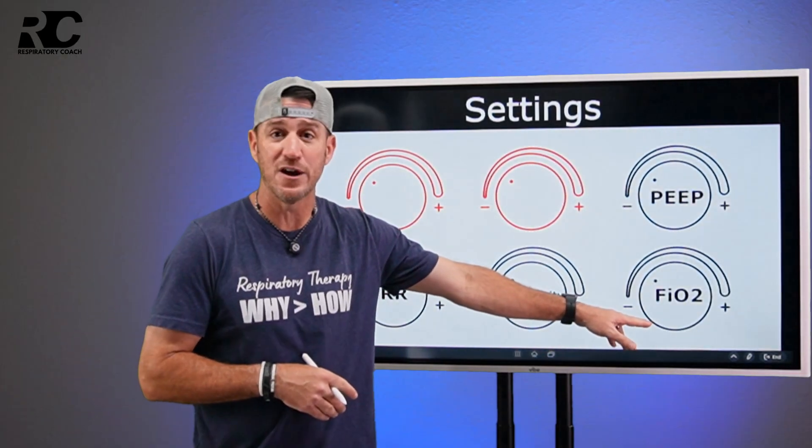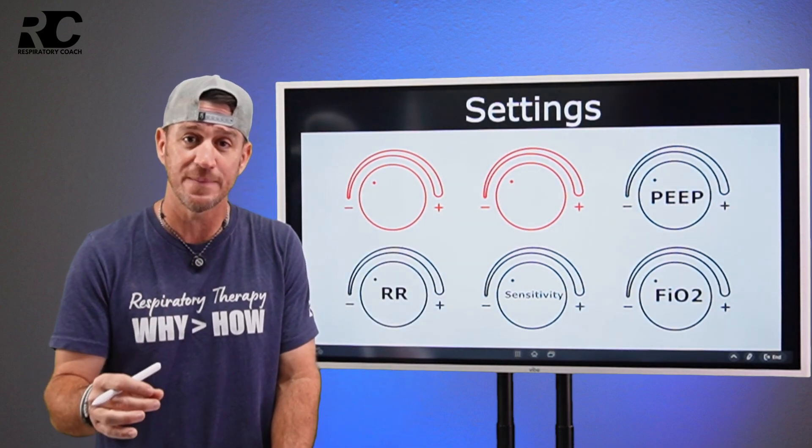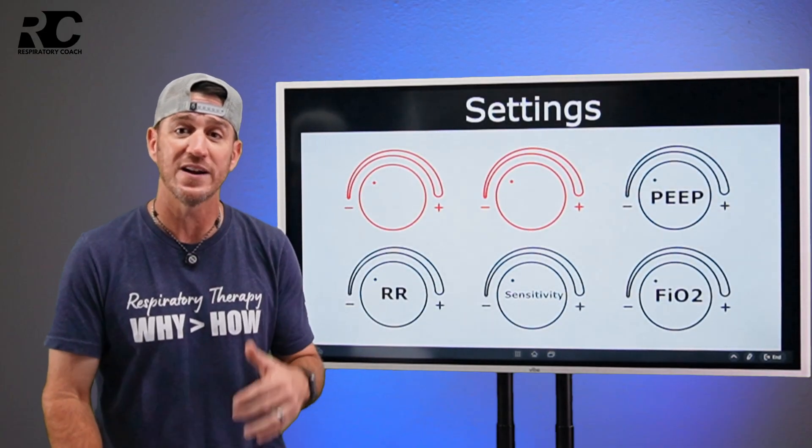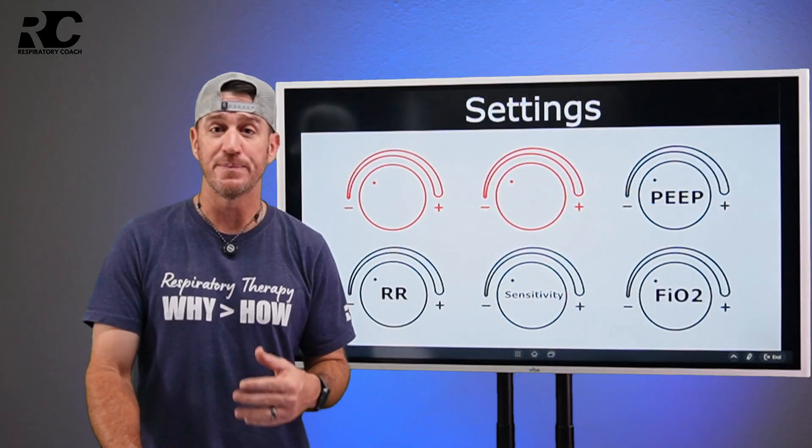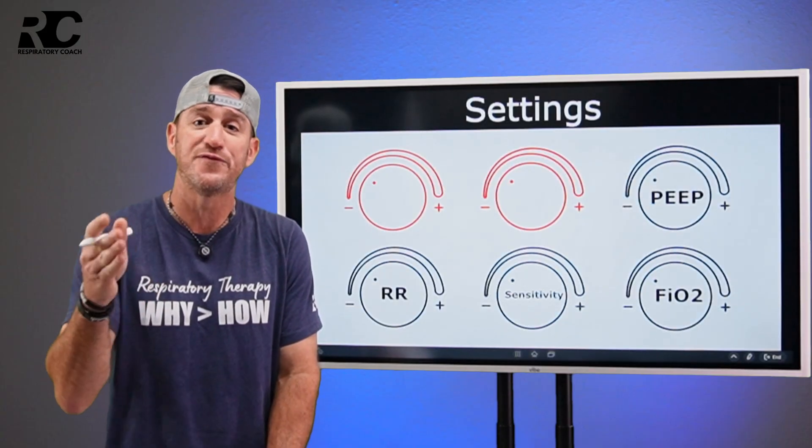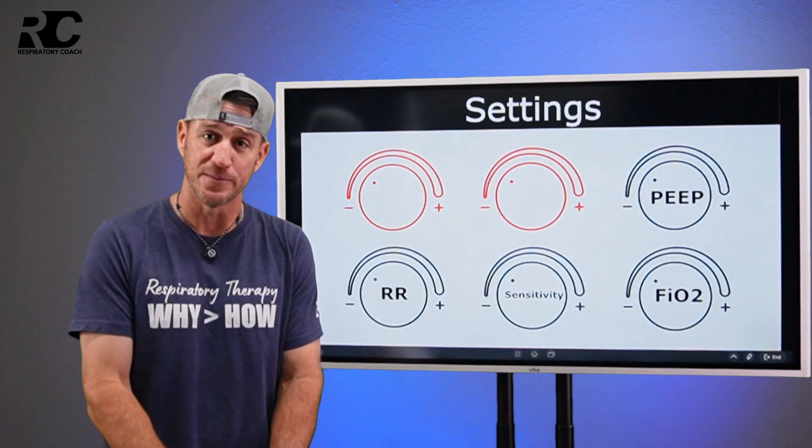Now this next one over here is FiO2. This is fraction of inspired oxygen. This is how much oxygen are you putting the patient on? Remember room air is 0.21. If you want to put the patient on 40% oxygen, then you would set it to 0.40. Remember FiO2 is always expressed in a decimal.